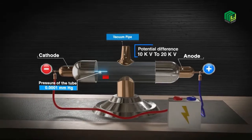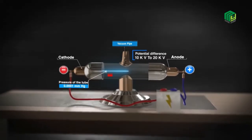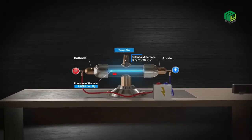The rays emitted by the cathode travel towards the anode. The attraction of rays towards the anode reveals that the rays carry negative charge.